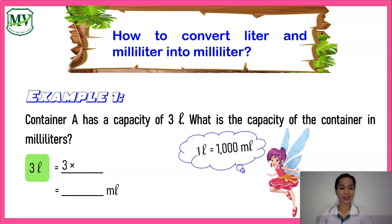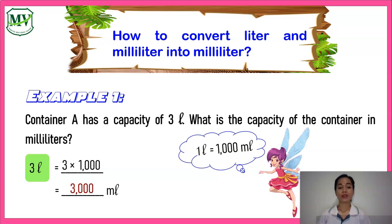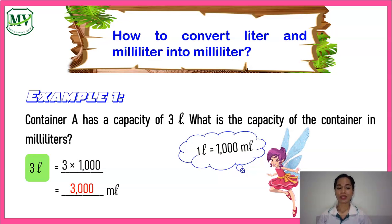Let's convert three liters to milliliters. So here, three times one thousand gives us three thousand milliliters. So we can say that the capacity of the container is three thousand milliliters.